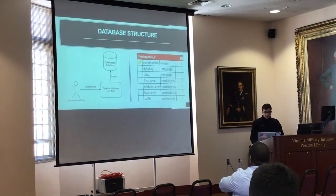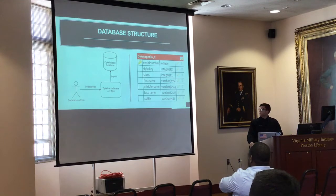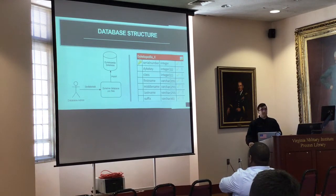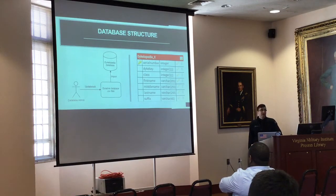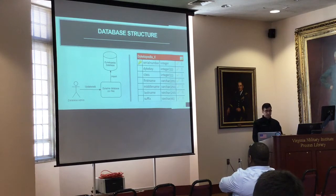This is the overall structure of the database. On the left there's a simplified version where the system admin can update the Dykeopedia database through CSV files — they edit them locally and upload them. A CSV file is essentially an Excel file. On the right there's an example table. The database contains three tables, each representing a dike line: dike lines 0, 1, and 2. The serial number is used as a primary key, a unique identifier. The dike key is used to track relationships. Other data captured includes class, first name, middle name, last name, and suffix such as junior, third, or whatever.